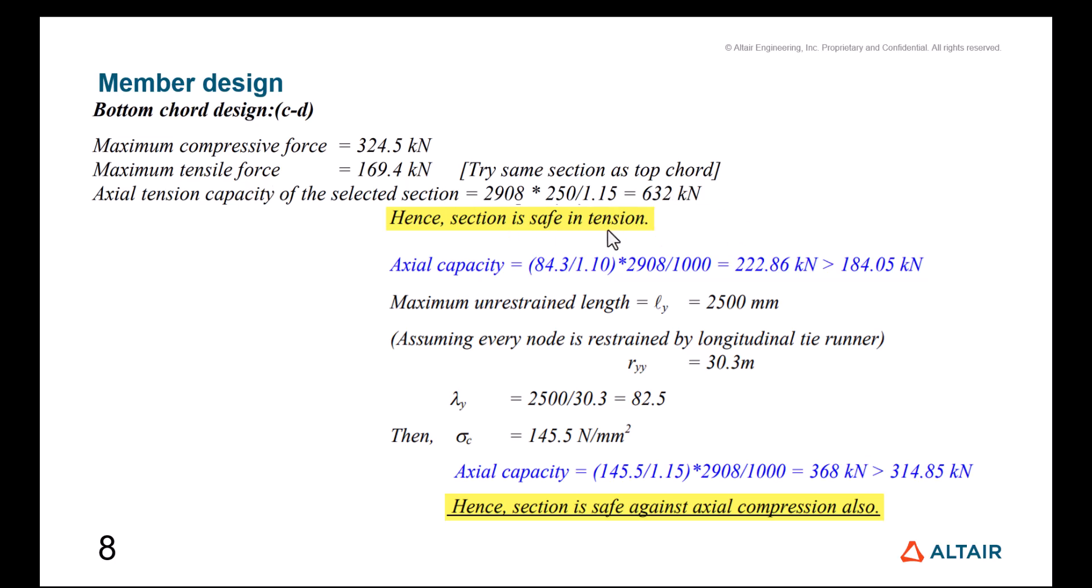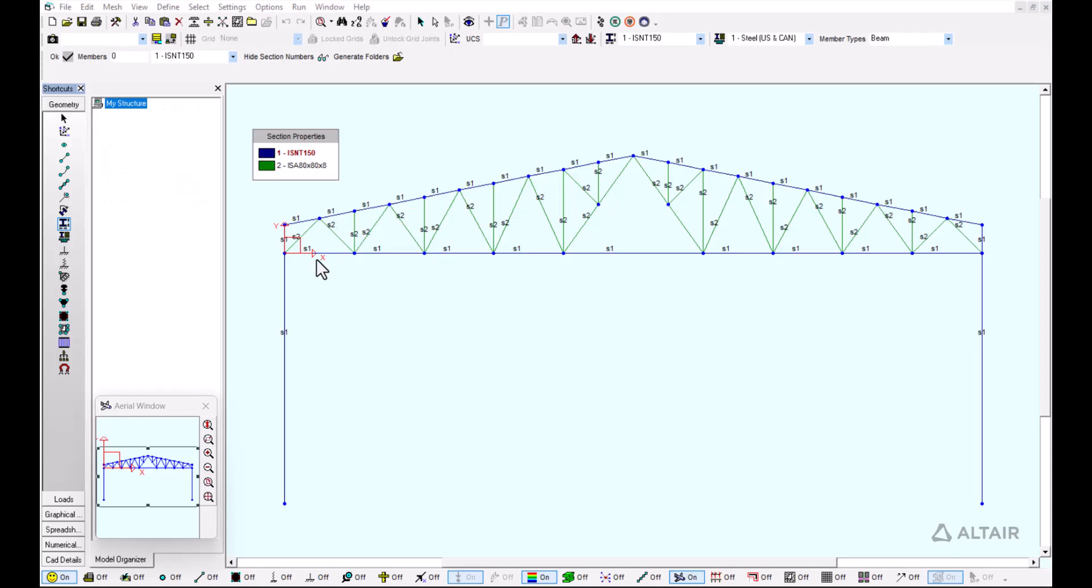Because we already know the capacities of this section, we know that the tension is 635 kilonewtons, so the tensile force is adequate. Now we calculate the axial capacity and we have that the axial capacity is 222.86 kilonewtons, which is more than the 184.5 kilonewtons that are necessary. When we assume that every node is restrained by the longitudinal tie runner, we get the final axial capacity of 368 kilonewtons, which is more than the 314.85 kilonewtons needed. The section is also safe against axial compression.